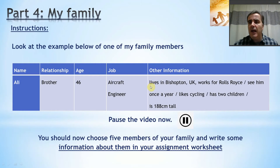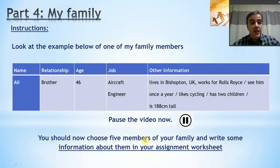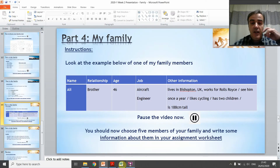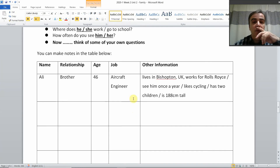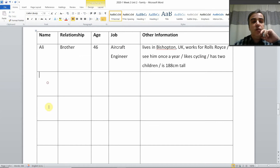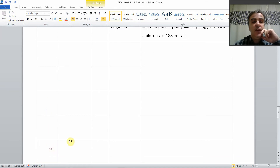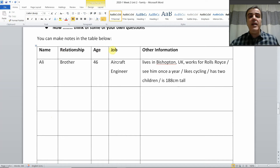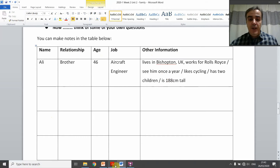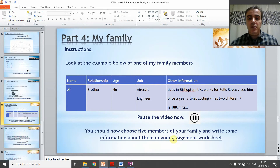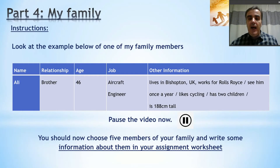Basically, I've given a lot of extra information — you don't need to give as much. But you should try to get as much as you can about these family members. Pause the video, choose five members of your family, and write some information about them in your assignment worksheet. Write down five people from your family, give their relationship, age, their job, and then some other information about those people.